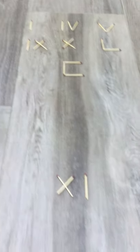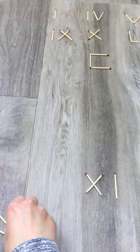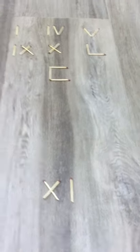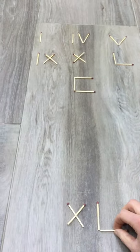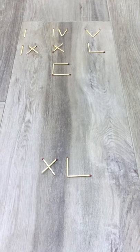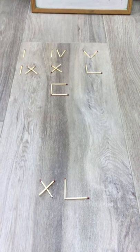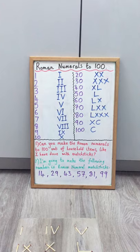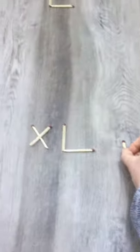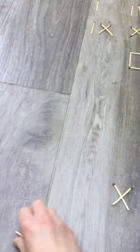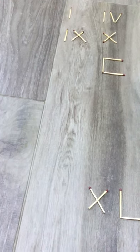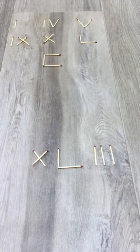Basically the X before the L means 10 less than L which is 50. So 10 less than 50 would be 40. So that's 40 but I need 43 so I need my three units which look like this. One, two, three. There we go, 43.